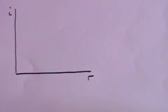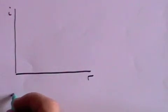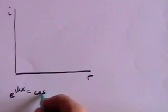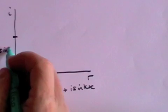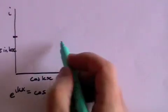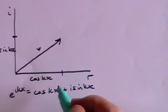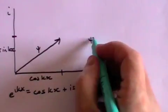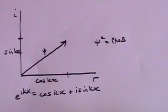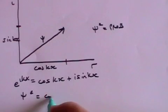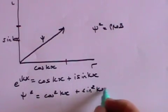We can plot the wave function on a complex plane. We plot the imaginary term along the vertical axis and the real term along the horizontal axis. E to the ikx equals cosine kx plus i sine kx. The sine kx term is the imaginary term and is plotted on the vertical axis. The cosine kx term is the real term and is plotted on the horizontal axis. The length of the vector, which is psi, is such that psi squared represents our probability term for finding the electron at any given point. Psi squared can be found by Pythagoras. Psi squared equals cosine squared kx plus sine squared kx, and that equals one.